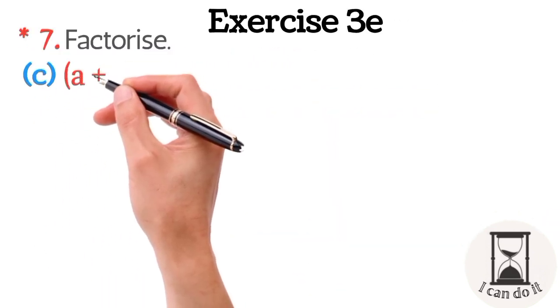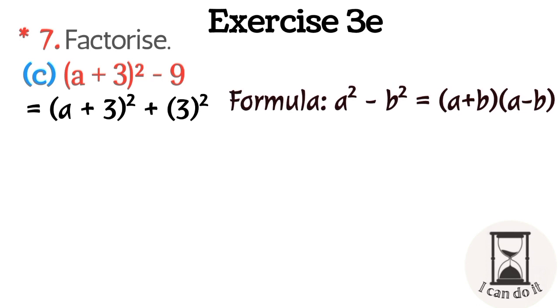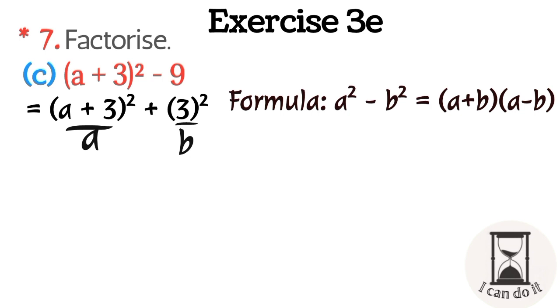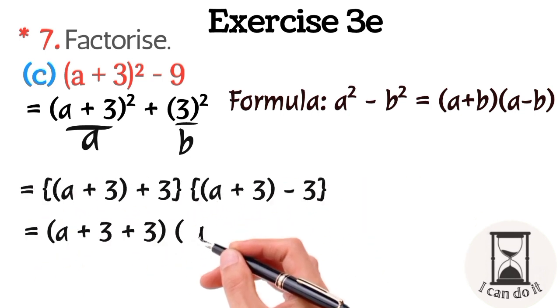Come to part c. It's (a plus 3) squared minus 9. As 9 is the square root of 3, so we apply the same formula. So (a plus 3) is a and 3 is b. Putting values, (a plus 3) plus 3 into (a plus 3) minus 3. Simplify it and done.